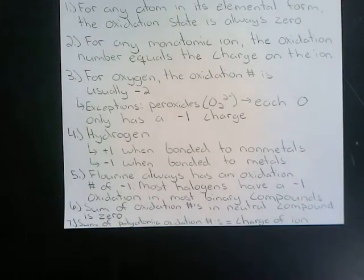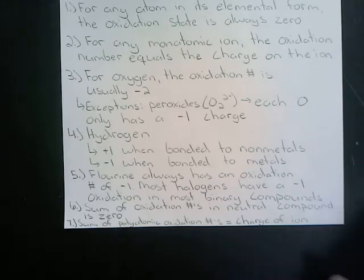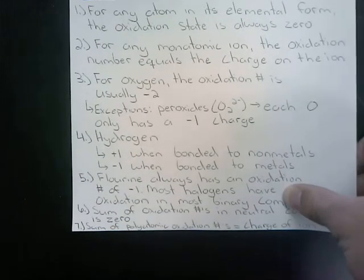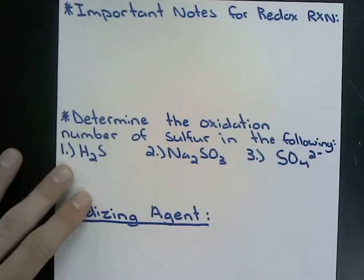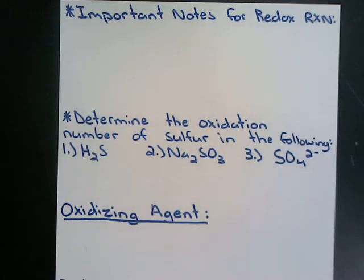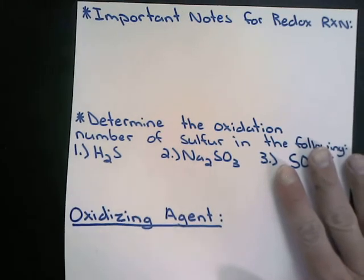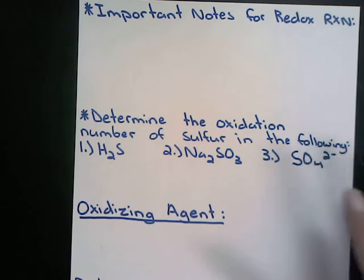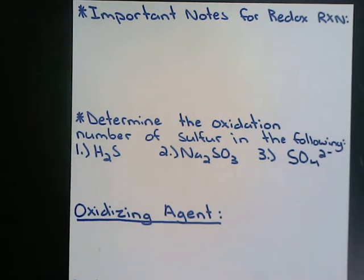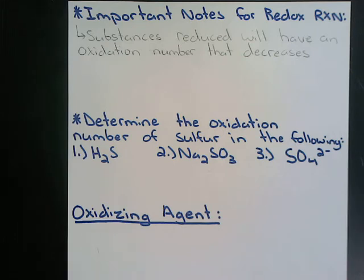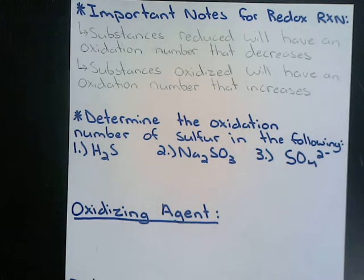These guidelines are important to apply to redox reactions. If a substance is reduced, it's going to have an oxidation number that decreases. Substances that are oxidized have an oxidation number that increases. Those are important things to remember as we go through some example problems.